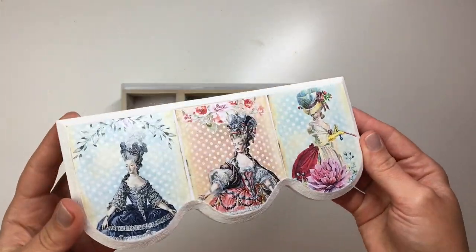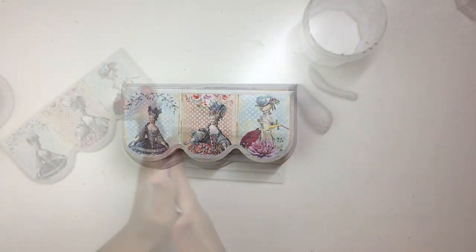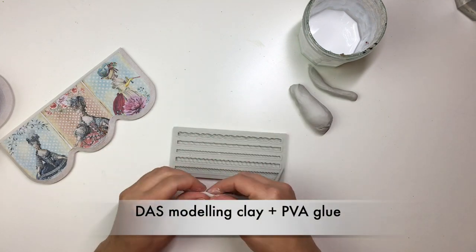When the glue was dry, I used some sandpaper to clean up the edges. And now we move on to the molding part.